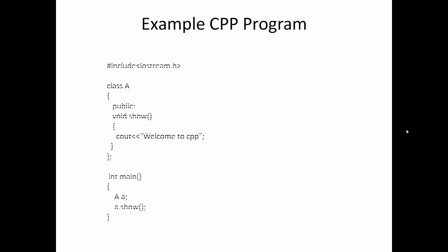Here is a simple example. We have a class called A. Inside main, we create an object of class A. Using that object, we call a dot show, which is a method of the class. The class name followed by the object name — then we invoke the method using object name dot method name — and that will print 'Welcome to C++'.